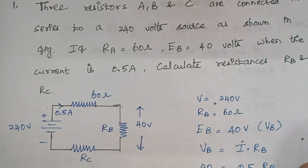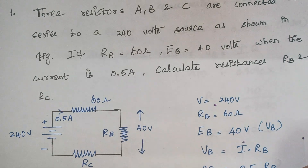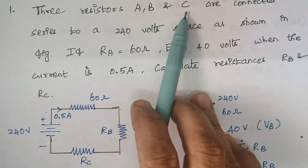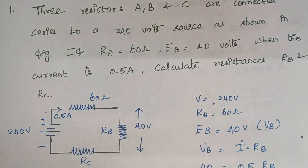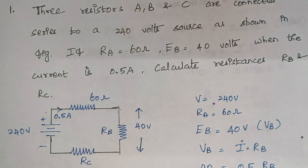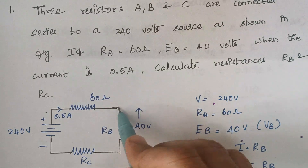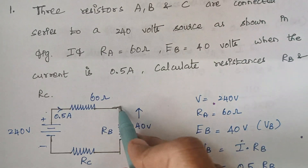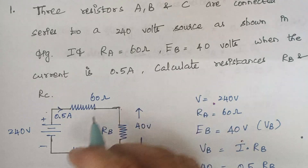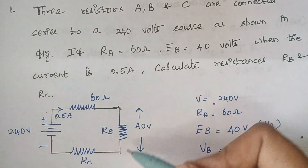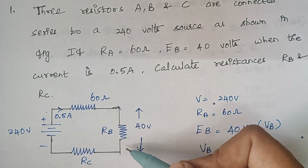We have three resistors A, B and C connected in series. Series connection means an end-to-end connection — the ending point of one resistor becomes the starting point of the next. For example, the ending point of the 60 ohm resistor becomes the starting point of resistor RB.